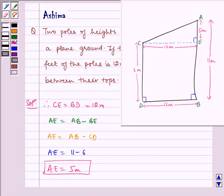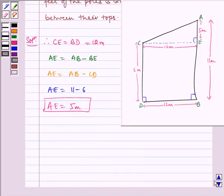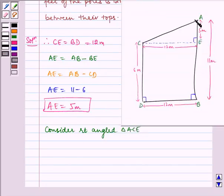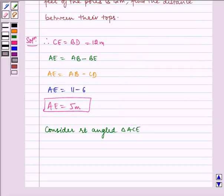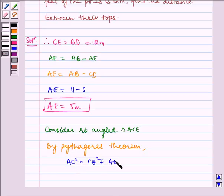Now consider right-angled triangle ACE. By Pythagoras theorem, we have AC squared is equal to CE squared plus AE squared.